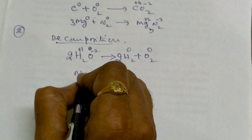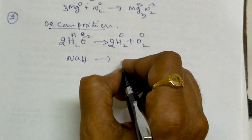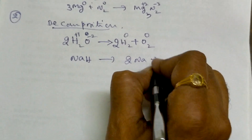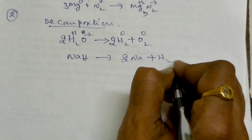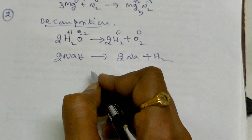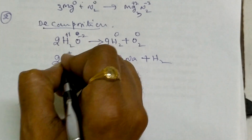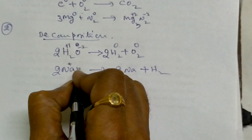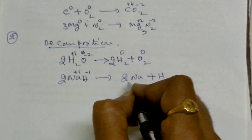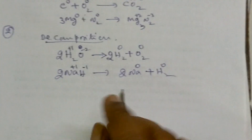Another decomposition example: sodium hydride 2NaH gives 2Na plus H₂. In NaH, sodium is plus 1 and hydrogen is minus 1 by rule number 4. In the products, sodium is 0 and hydrogen is 0. That is a decomposition and redox reaction.